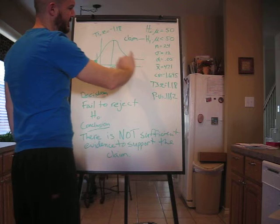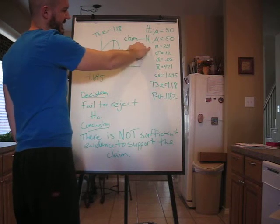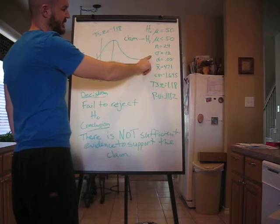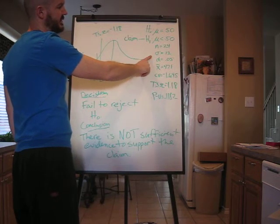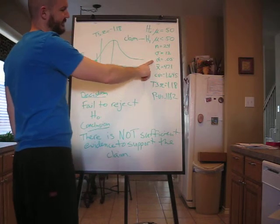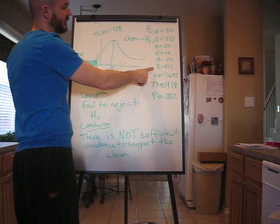Now our given information is sample size n is 44. Standard deviation of the population, sigma, is 12. Alpha is 0.05. Our x-bar, or sample mean, is 47.1.